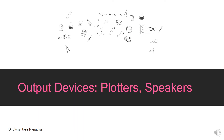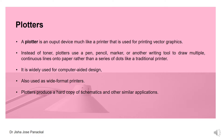Today we will learn about two output devices: plotters and speakers. Plotters are similar to printers. A plotter is an output device much like a printer, that is used for printing vector graphics. So a plotter is a printer itself but it is used especially for printing vector graphics — that is the major difference between a printer and a plotter.